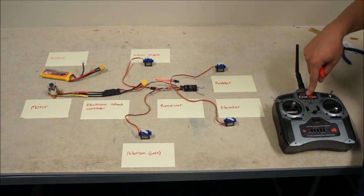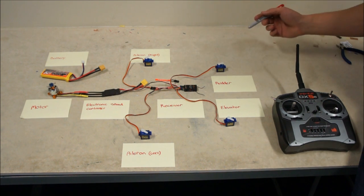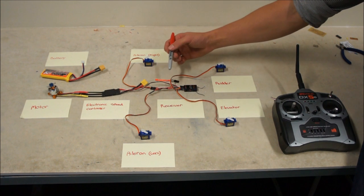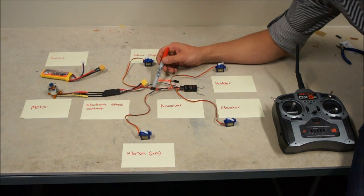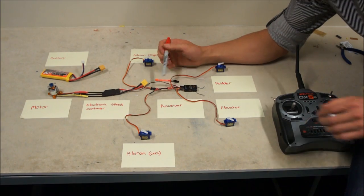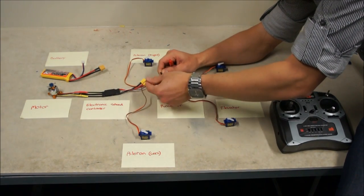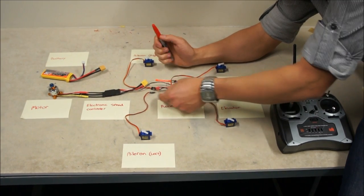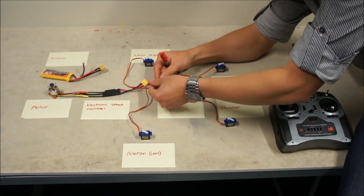Unfortunately this DX5 doesn't have mixing to be able to use dual servos for ailerons. So what we've had to do is solder up a little wire harness. So it's just got one plug and it's going to two lots of three male headers. And so they're plugging into each of the servos for the ailerons.